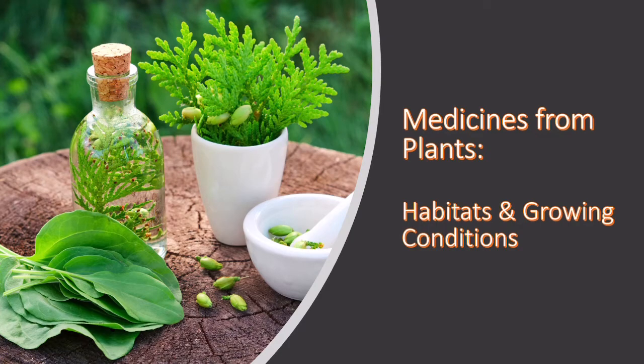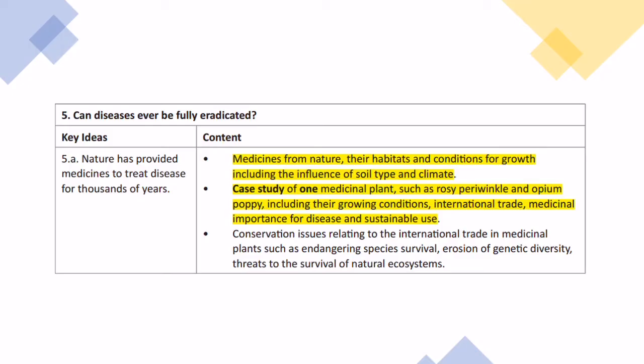In today's video I'm going to talk about medicinal plants, where they grow and the conditions under which they grow. This is part of the OCR A-level spec for Disease Dilemmas, talking about how we can get medicines from nature. I'm also going to talk about a specific plant, the rosy periwinkle, and the conditions under which it grows.